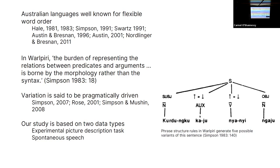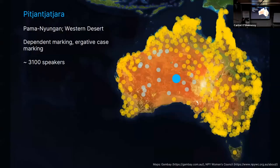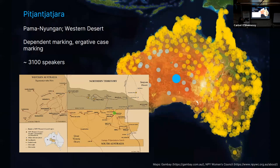Our study is based on two types of data: one is an experimental picture description task, and the other is more spontaneous speech. Pitjantjatjara is a Western Desert language spoken in central Australia. It has a dependent-marking case system and is still very vibrant, and one of many children's first language. The fieldwork for this project was carried out in communities shown in green on the map, just below the Northern Territory border.